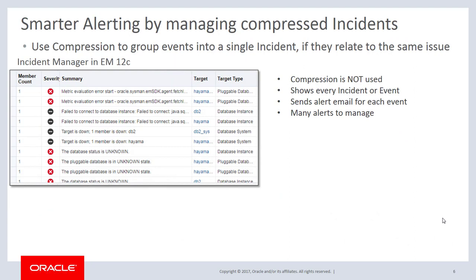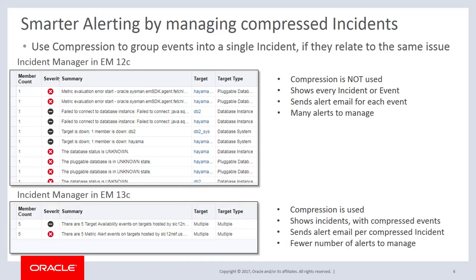The best practice is to use the compression feature to group events into a single incident if those events relate to the same issue, so that you only need to deal with a single incident instead of managing multiple events or incidents separately. We have a screenshot of Incident Manager in 12c where compression is not used — each event or incident shows up in list view. Below that is Incident Manager in 13c where compression is used, showing only two incidents: one for target down and one for metric alert, each with five members included. Instead of managing 10 different events, you only manage two incidents with related events consolidated.